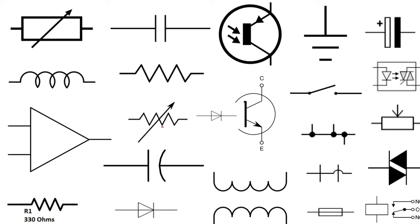This symbol without this arrow is used in the US. But for this symbol, this is an international symbol. So this is a variable resistor, as you see here.